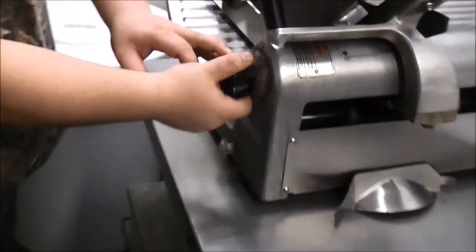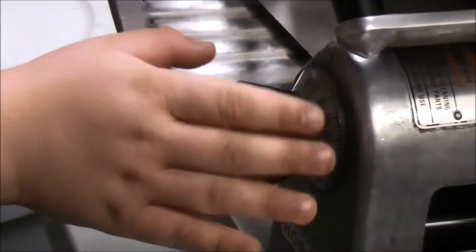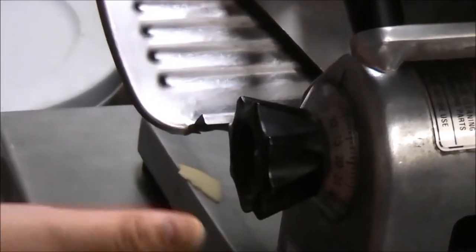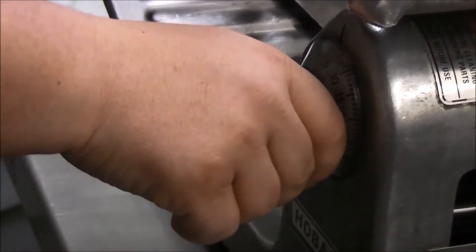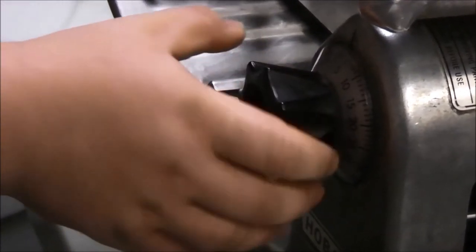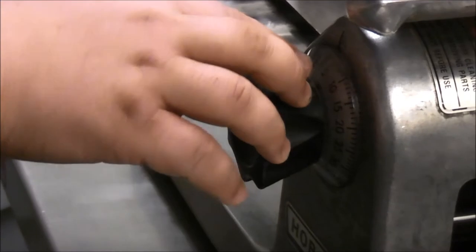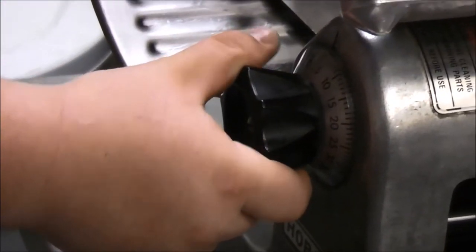We will adjust our knobs to whatever thickness we want. It can actually go up to like an inch thick if you want to, but normally we're cutting cheese for cheese trays, sandwiches and things like that, so we stay between a zero and a five. So I'm going to start at the five.